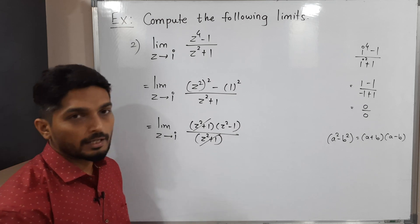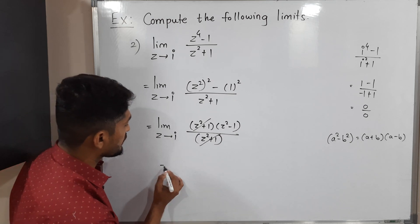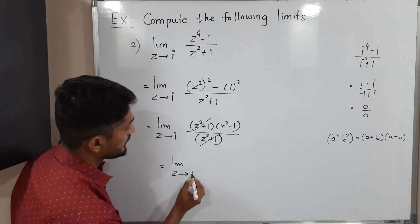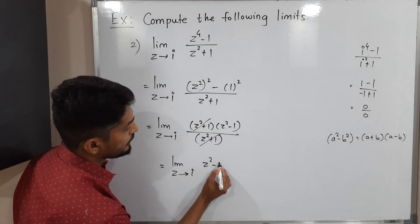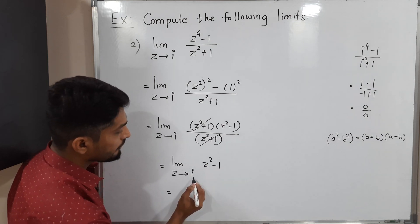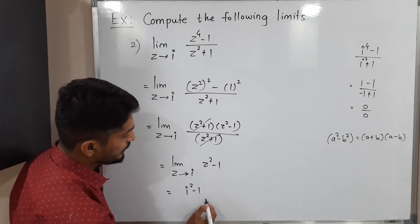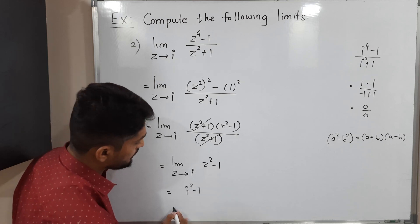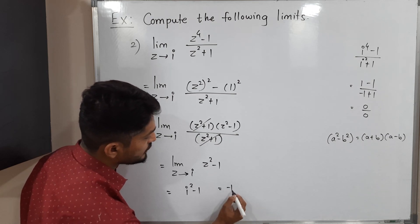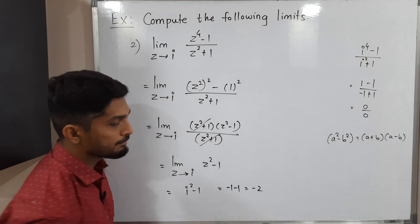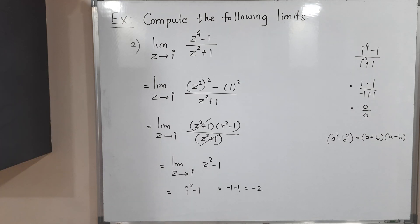After cancelling the common factor (z² + 1), we can directly apply the limit. We evaluate limit as z tends to i of (z² - 1): substituting z = i gives i² - 1 = -1 - 1 = -2. So the answer is -2. In this way we completed this example.